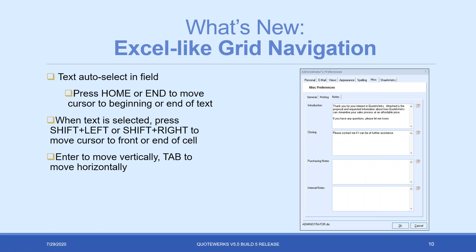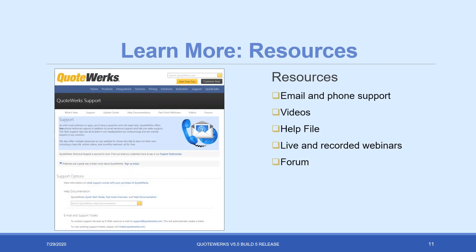We also made changes to grid navigation — I'm calling it Excel-like grid navigation. Many of you are familiar with using Enter, Tab, and arrow keys to move around in Excel, so we've changed things to make navigation easier. One subtle but important change: selecting a field will highlight the text automatically, and you can use the Home and End buttons to move the cursor to the beginning or end. You can use Enter to move vertically through fields and Tab to move horizontally. This prevents Enter from just adding a new line when text is present in a field.